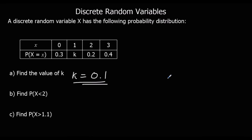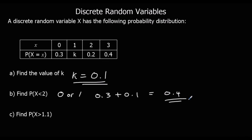Because all the events have to add up to one whole. Find the probability that x is less than 2 — that means it can be 0 or 1, so 0.3 plus 0.1 equals 0.4. Find the probability that x is bigger than 1.1 — what's bigger than 1.1? We can have 2 or 3, so 0.2 plus 0.4 equals 0.6.